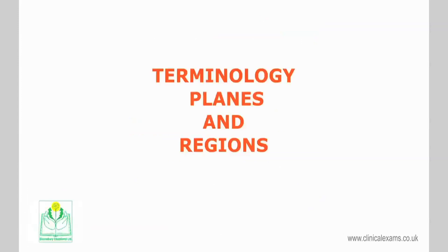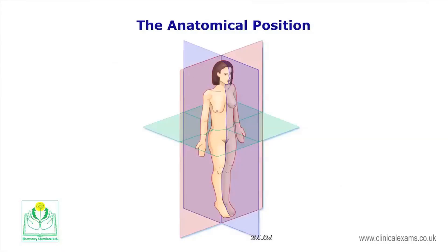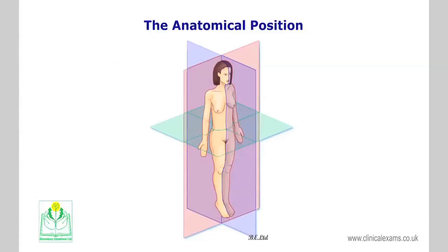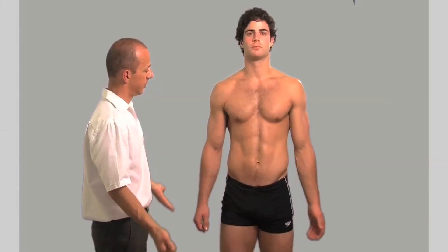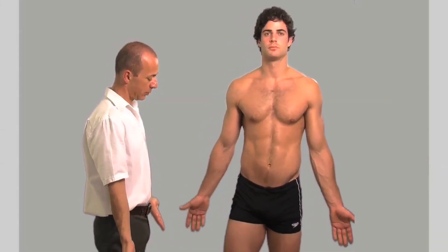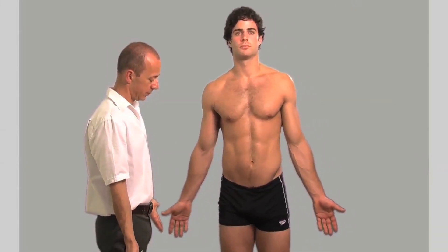General Anatomy: Terminology, planes and regions. When describing the position of body structures, you must bear in mind that this is always in relation to the anatomical position. The subject stands erect with arms by their side and palms facing forwards.